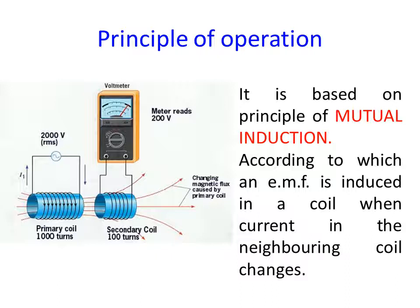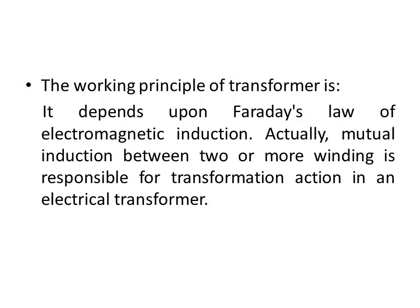Because of the alternating supply, alternating flux is generated across the coil. There is no need for physical motion of the coil or magnet — that is why transformer is a static device. Because of the alternating supply source, alternating flux is generated, and due to that alternating flux, EMF is generated across the transformer. This depends upon Faraday's law of electromagnetic induction. Mutual induction between two or more windings is responsible for the transformation action in an electrical transformer.